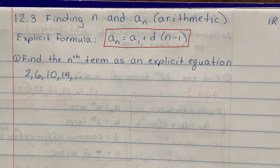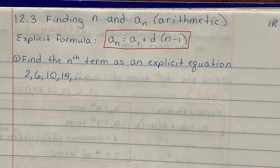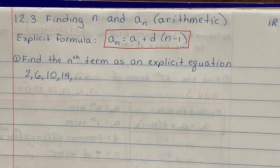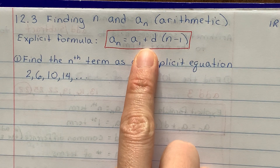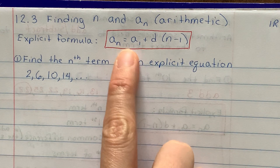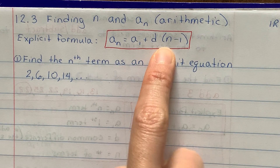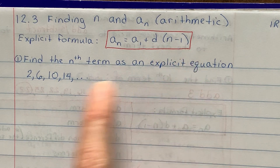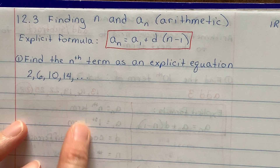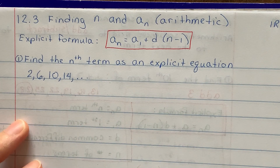Today's idea is how to find n and a sub n of an arithmetic sequence. I have the formula written on top here: a sub n is equal to a sub 1 plus d times n minus 1. And here's my first question.